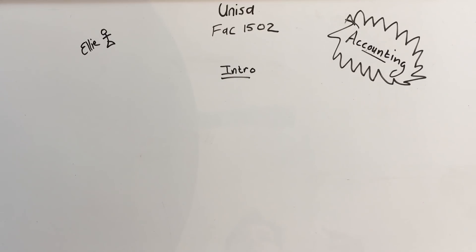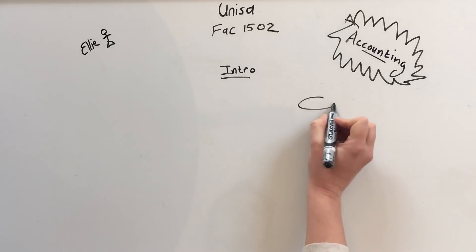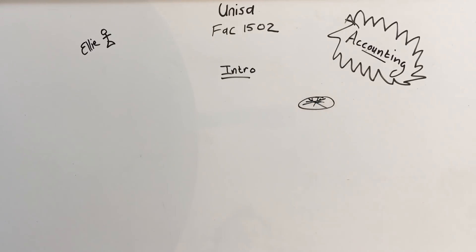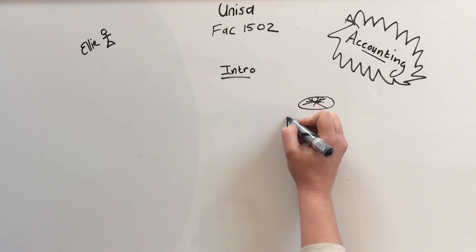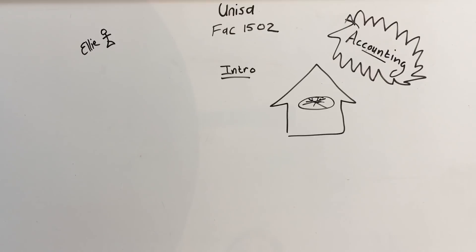I'm going to start by explaining it using a very simple example of pizza. I still love pizza and my love for pizza will never change. Now we are going to start a pizza shop. What do we need to have this shop? What kind of money is going to go in and out?